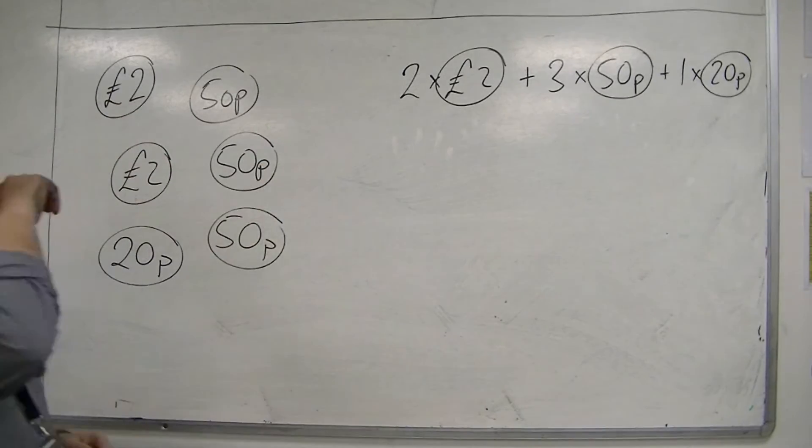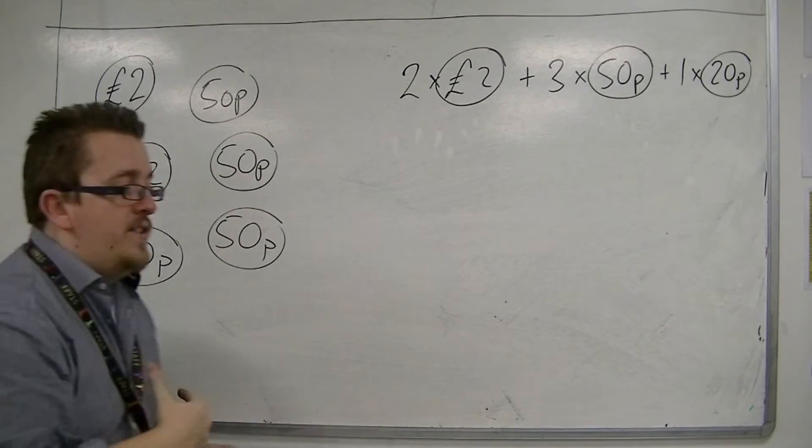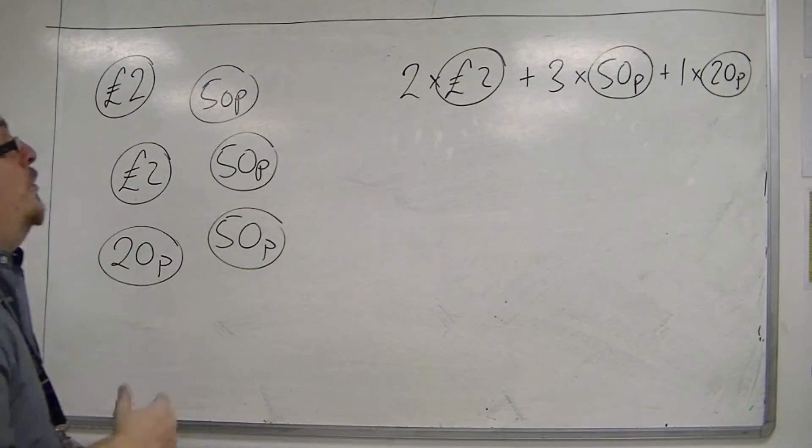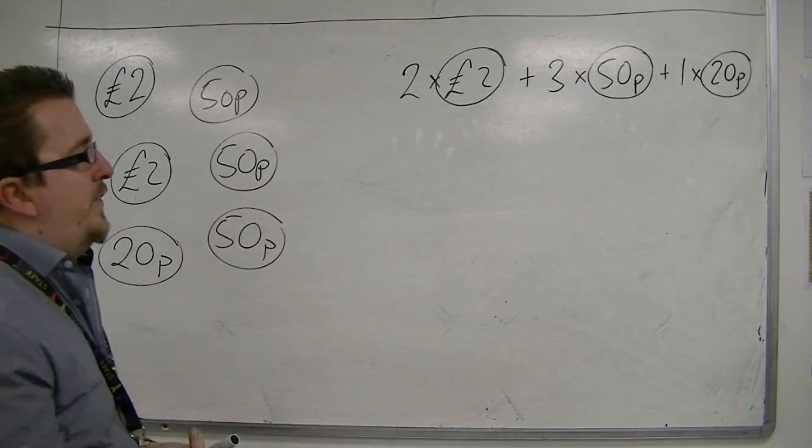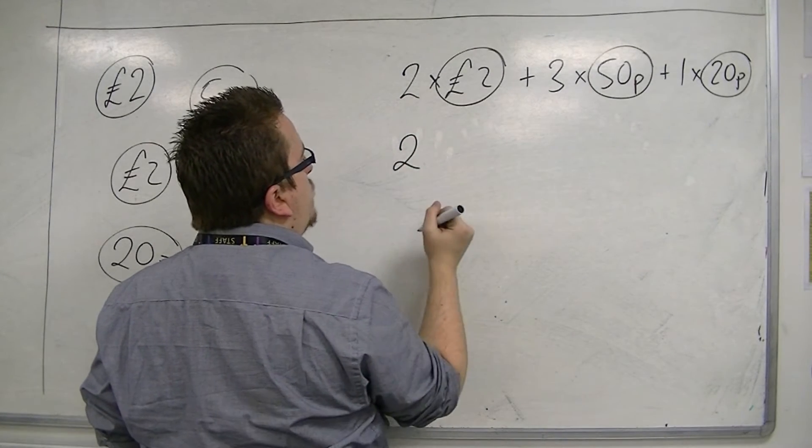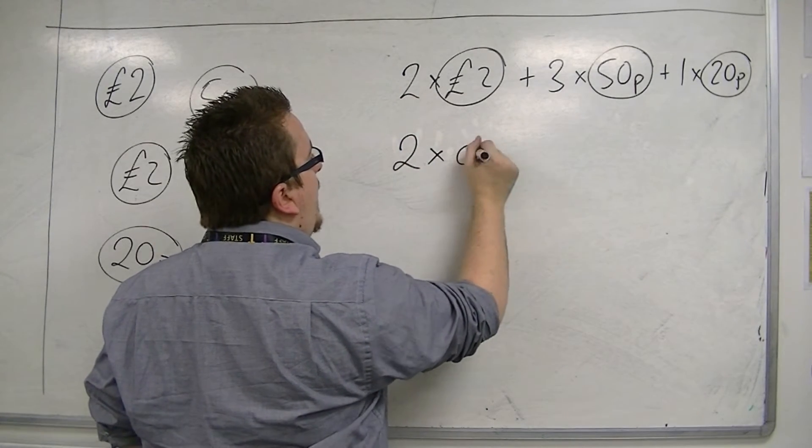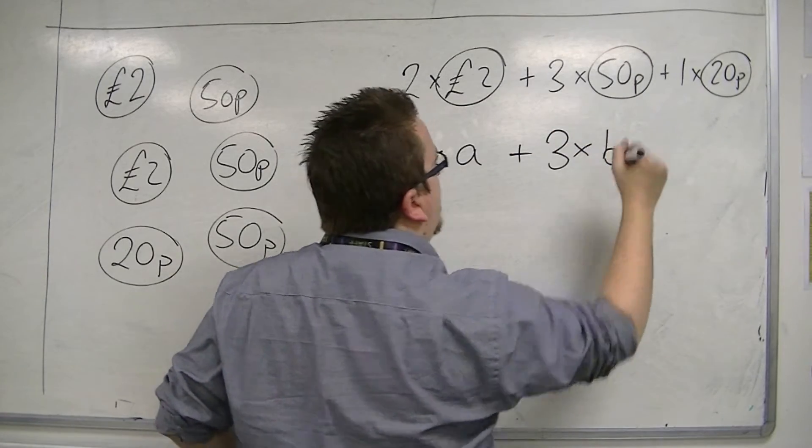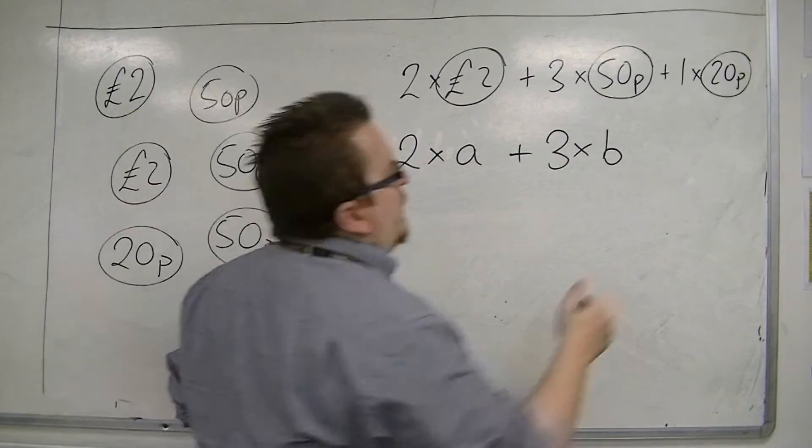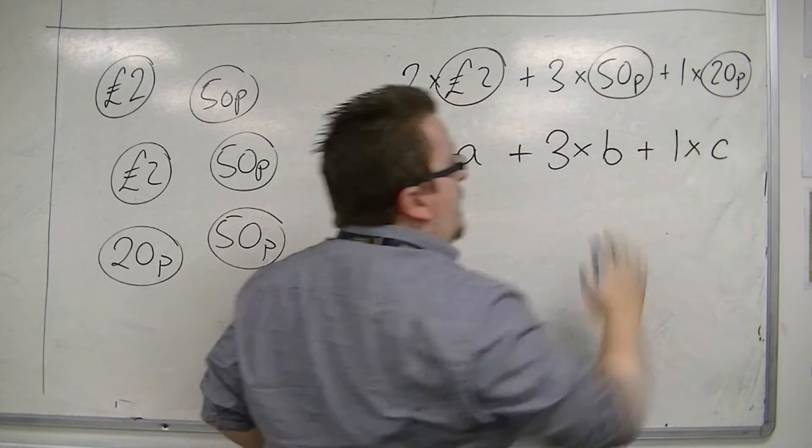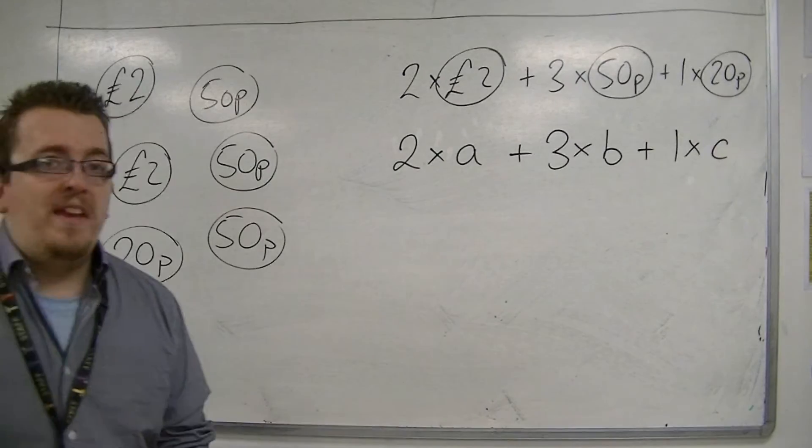So, what I've got here is actually some very basic algebra going on, because I could then start to say, well I've got two £2 coins, and I'm going to represent that using A, and I've got three 50p coins, which I'm going to start using B, and then I've got one 20p coin, which I'm going to call C.